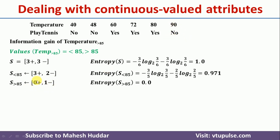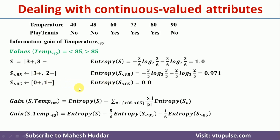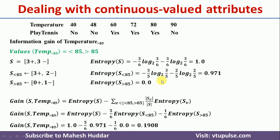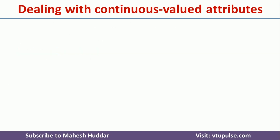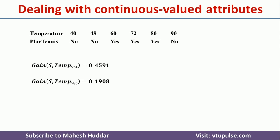So for greater than 85, we have zero positive and one negative — the entropy is 0.0 because we only have negative examples. Putting this into the equation, we get an information gain of 0.1908. How this is calculated is explained in detail in the other video — just find the link in the description below.